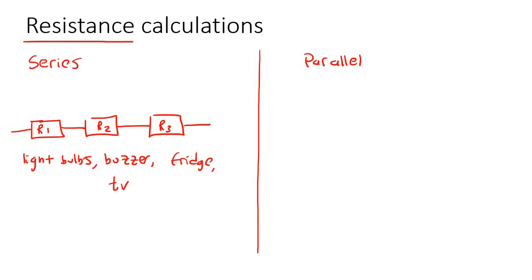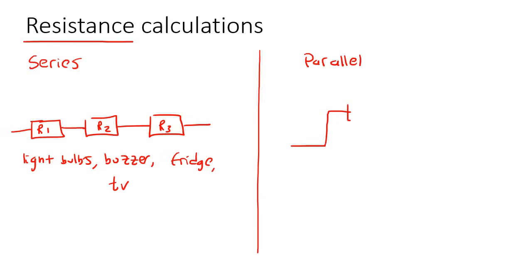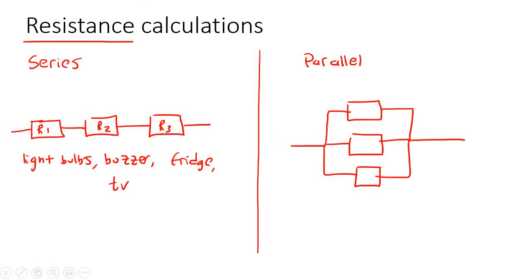Now parallel — you remember in maths you get parallel lines. So that's what parallel is. You might get three of them in parallel, for example, labeled R1, R2, and R3.